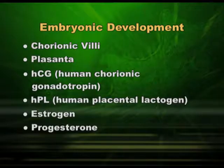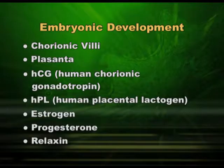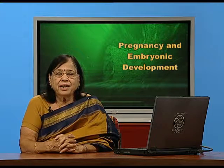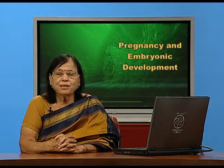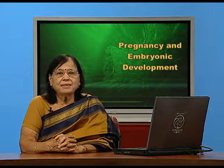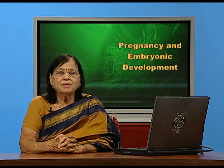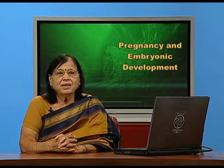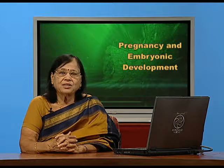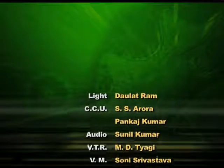HCG looks after the pregnancy in these 6 months. Estrogen and progesterone you already know. HPL — human placental lactogen — gives the message to the breast to start producing milk. And relaxin will relax the uterus at the time of childbirth; the vagina and uterine opening should relax and become slightly bigger so that the baby can pass through. That is parturition or childbirth, which takes place at the end of the 9th month with the help of relaxin, oxytocin, and many other hormones.